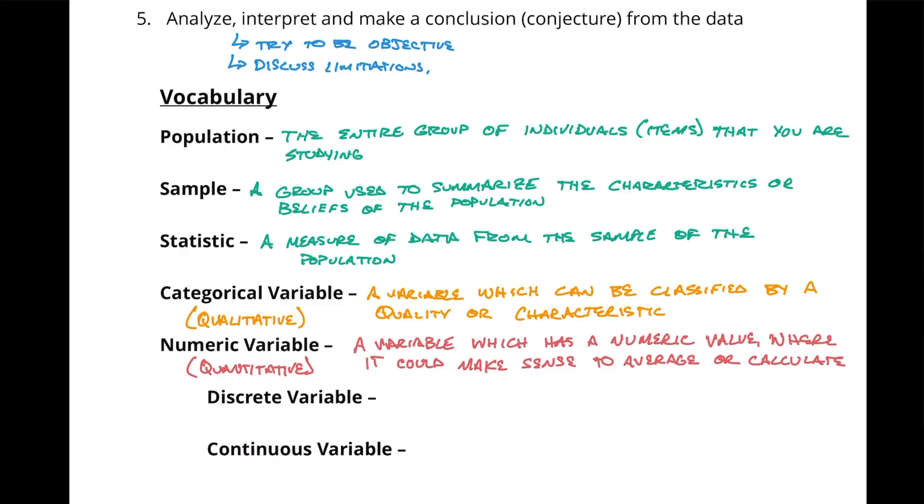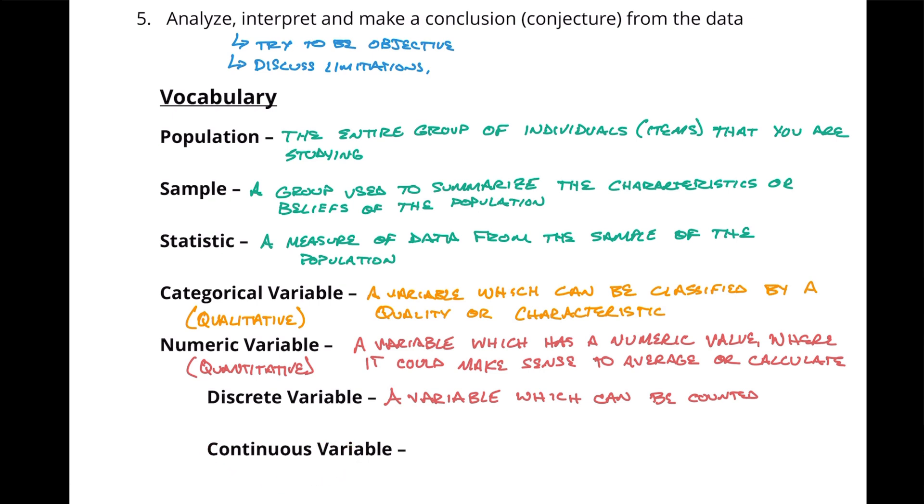Within the numeric variables, we also have discrete variables and continuous variables. A discrete variable is a variable which can be counted. Some examples might be the number of cars in a parking lot, or the points you get on a test — those are countable items. A continuous variable is a variable which can be measured. Some examples of continuous variables might be your height, weight, or the time it takes to complete a race. The way I think about the difference: discrete I can count on my hand. Continuous — if I had the best measuring tools, I could continue to break down that measurement into smaller and smaller decimals.